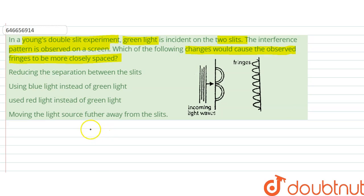The fringe width, that is beta, is equal to lambda d by D. So what would cause fringes to be more closely spaced? That means we have to find the condition for beta to decrease.